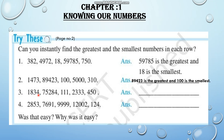Now question number 3: 1834, 75,284, 111, 2333, and 450. Among these numbers, 75,284 is the greatest number because it has 5 digits. And 111 is the smallest number. So you can write: 75,284 is the greatest and 111 is the smallest.